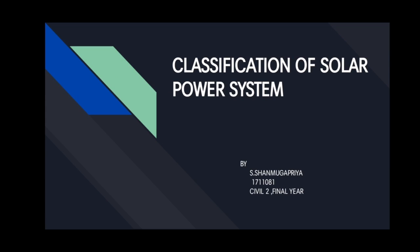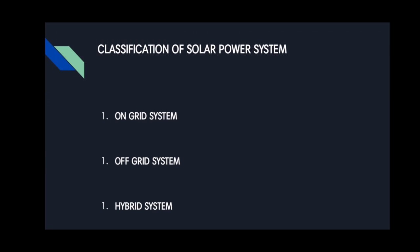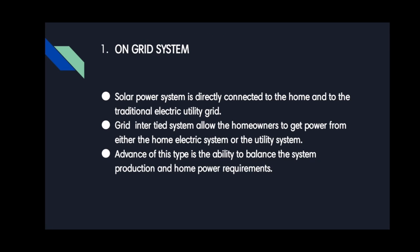Classification of solar power systems. It is classified into three types: on-grid system, off-grid system, and hybrid system. The on-grid system is a solar power system that is directly connected to the home and to the traditional electric utility grid. This system allows homeowners to get power from either the home solar system or from the traditional grid.